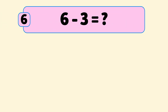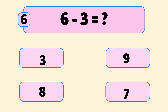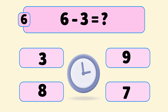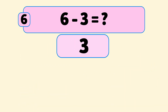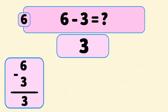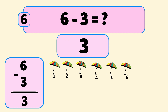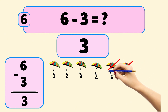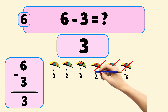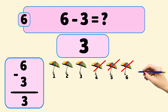What is six minus three? The answer is three. We start with six umbrellas and remove them one by one: six, five, four. Now we have three umbrellas left.